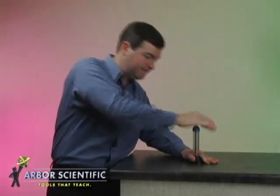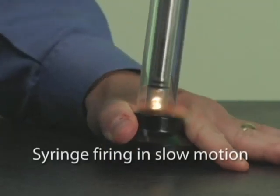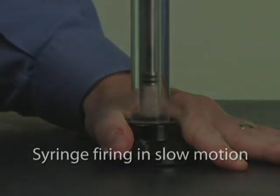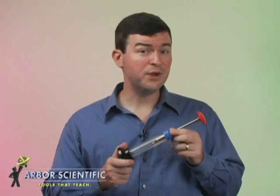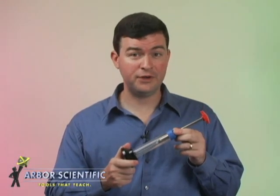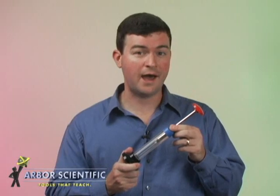Press down rapidly on the piston. The increase in pressure causes the air's temperature to go up so much that the cotton catches fire. The air inside the fire syringe can reach a temperature of over 500 degrees Fahrenheit. This is what causes the cotton to ignite.